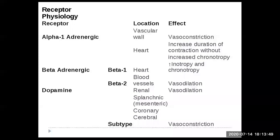Different receptors are found in different concentrations in different areas. Beta-2 receptors are focused around renal vasculature and lung tissue vasculature, while you have more beta-1 receptors in cardiac tissue, and more alpha-1 receptors in vessels. That explains why a drug can have one effect in one part of the body and a different effect elsewhere. Dopamine is even more interesting — it is dose-dependent in its effects. At different doses, it will affect different receptors, which is why they talk about different dose ranges having different effects on different parts of the body.